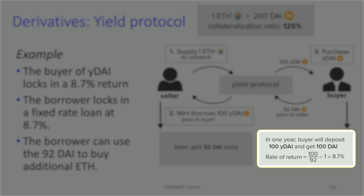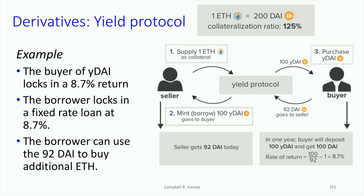So think about what's happening here — the seller is effectively getting 92 DAI. Then, in one year, the buyer is going to deposit the 100 Y DAI and they will get 100 DAI. The buyer, remember, at the beginning pays out 92 DAI to the seller, and in the end, when they deposit the 100 Y DAI, they get back 100 DAI. The rate of return: 100 divided by 92, subtract 1, is 8.7%. In my opinion, it's an ingenious idea to introduce fixed rate borrowing and lending into the DeFi space.